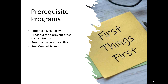Pest control is another area. Pests, if they get into a food manufacturing environment, can bring in potential hazards — again, microbial hazards. We don't want that, so you need to have a pest control program in place. Allergen management programs are also important. If there are certain components within your food that might result in allergic reactions, you need an allergen management program in place.